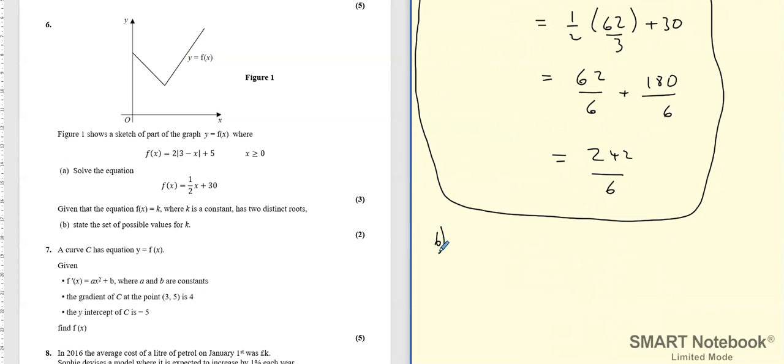Now it says given that f(x) equals k where k is a constant has two distinct roots, state the possible values of k.